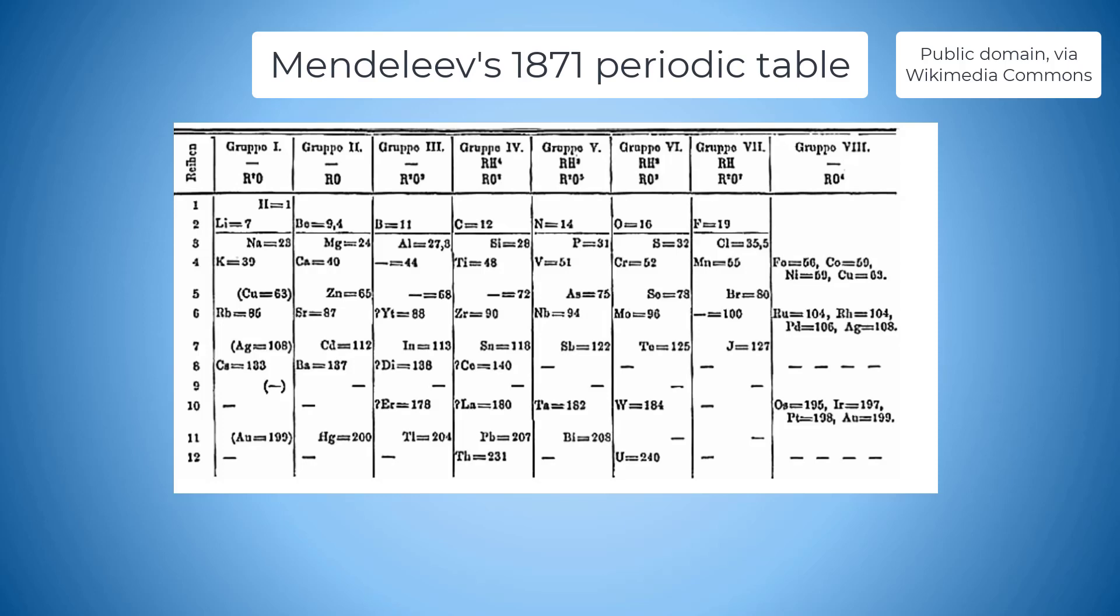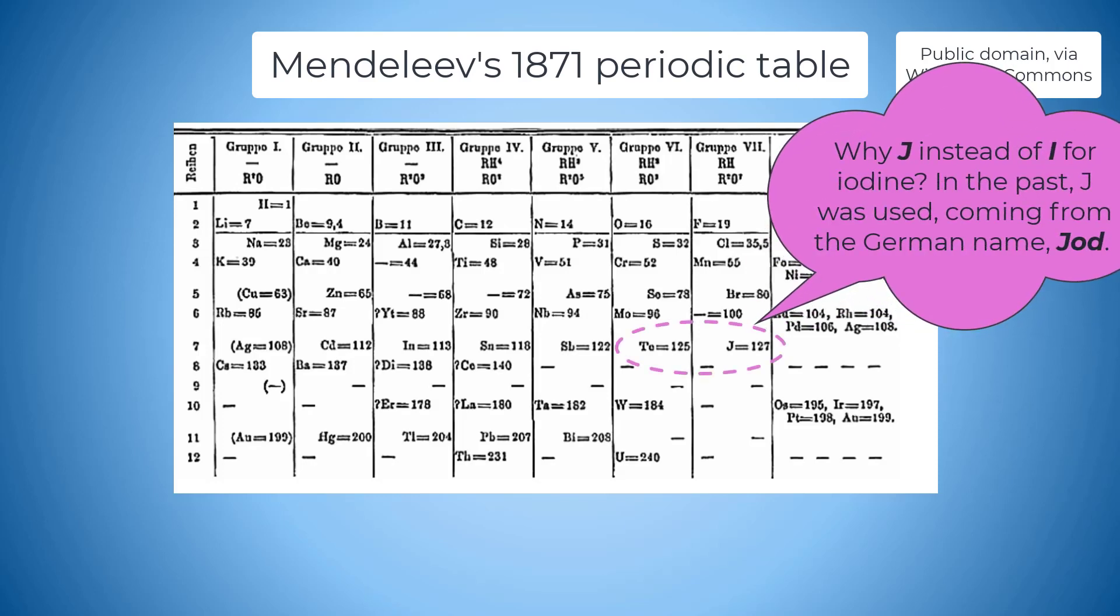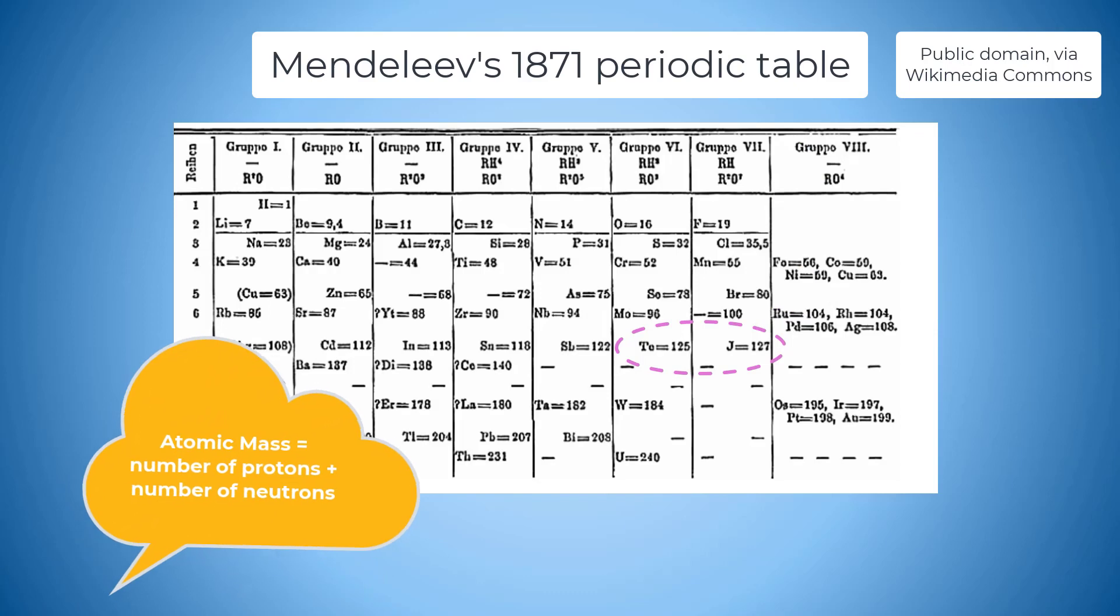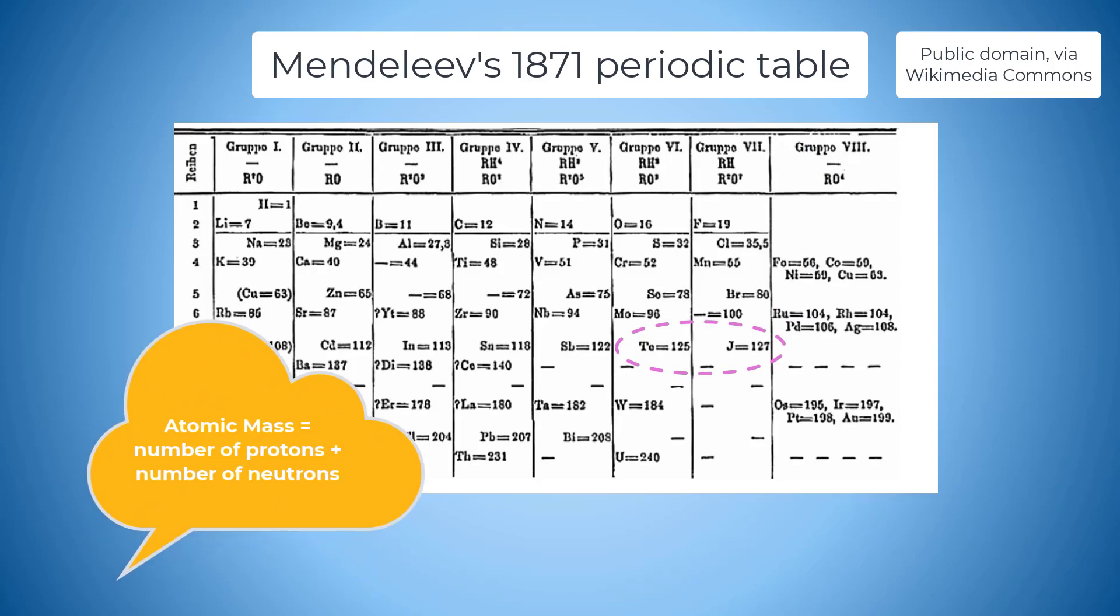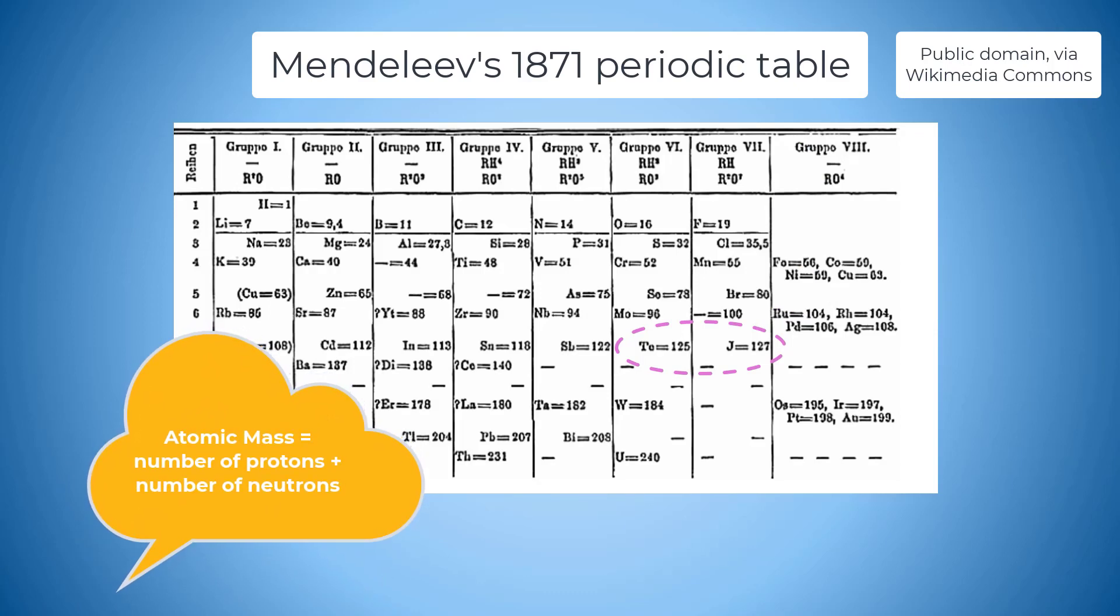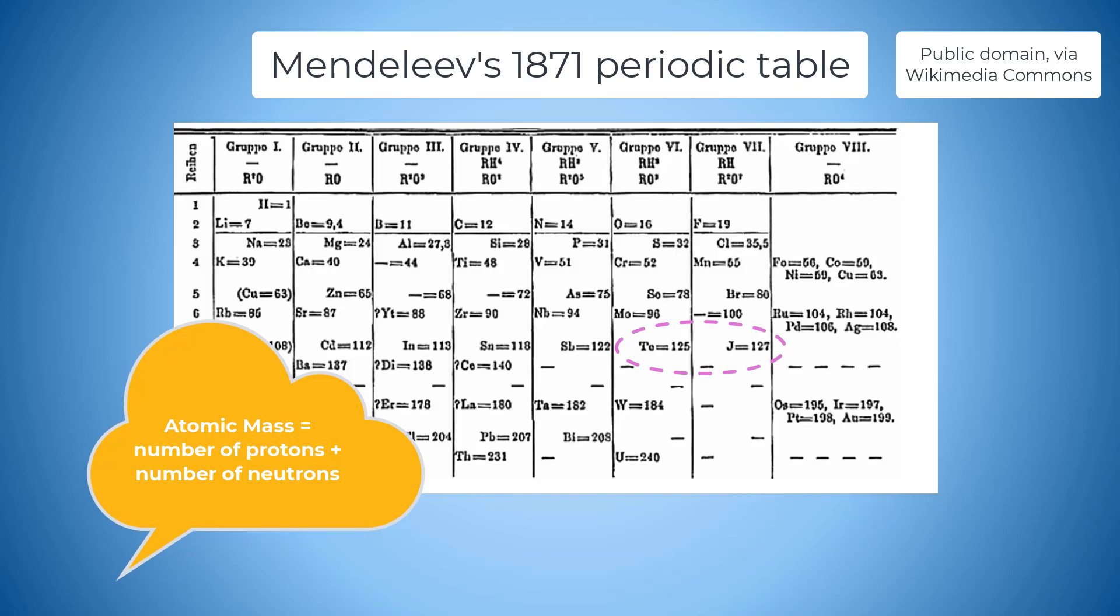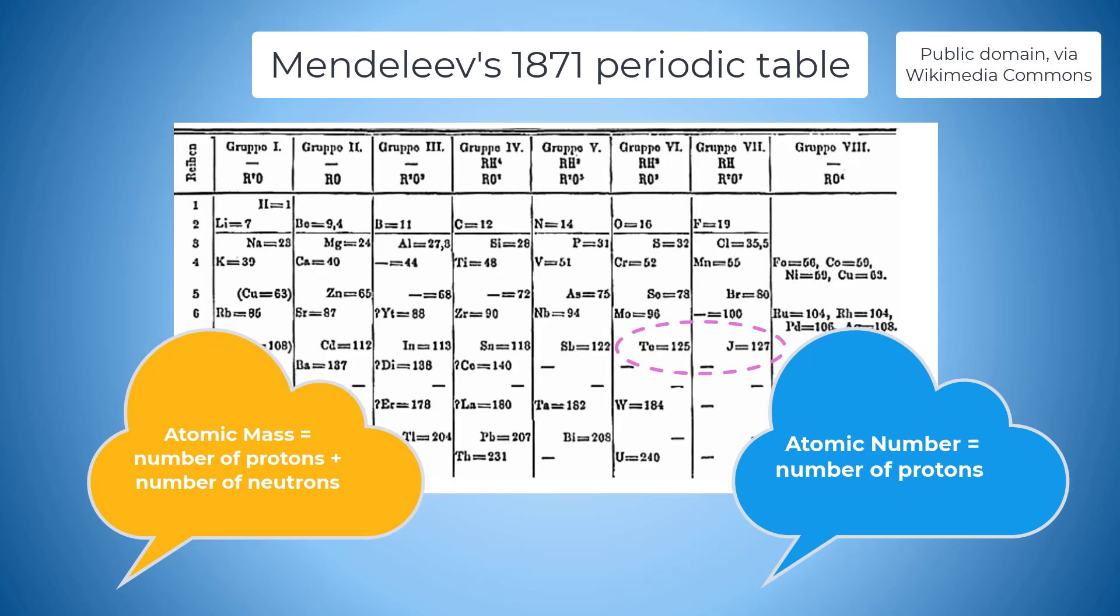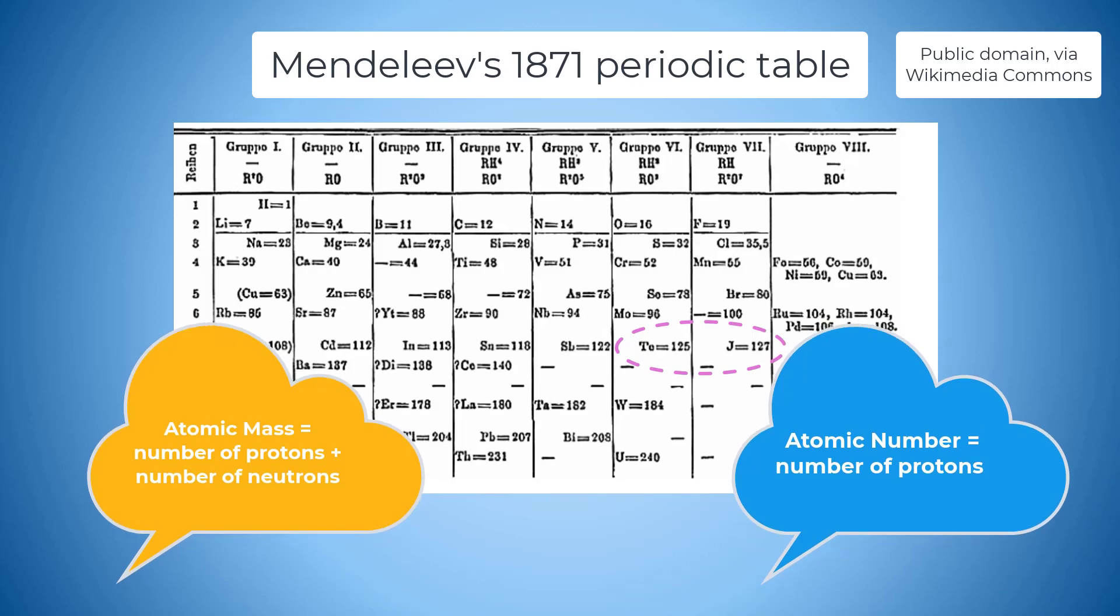If an element appeared to be in the wrong place he preserved his periodic property law above everything else, swapping iodine and tellurium to keep the halogens in one column and tellurium with its group six elements oxygen, sulfur, and selenium. He assumed that one of their atomic masses must be wrong but in actual fact iodine does have a lower atomic mass than tellurium. That's the number of protons and neutrons but its atomic number is higher. Unfortunately for Mendeleev protons hadn't been discovered back then.